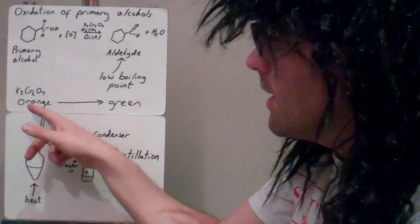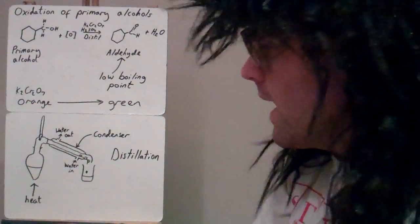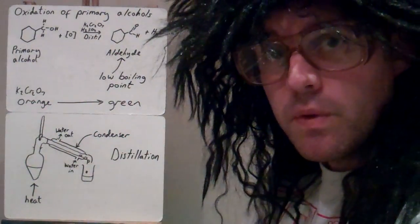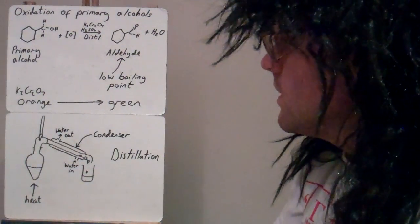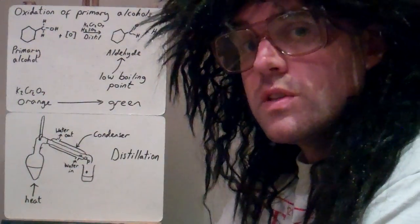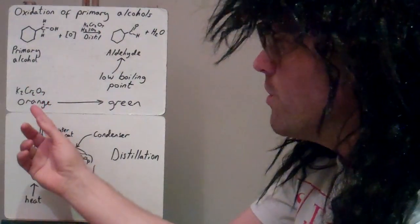And potassium dichromate at the beginning reaction starts off orange, it reacts and it goes green. Because it is itself being reduced to a different compound. And that's how we know the oxidation has occurred because the solution will go from orange to green.